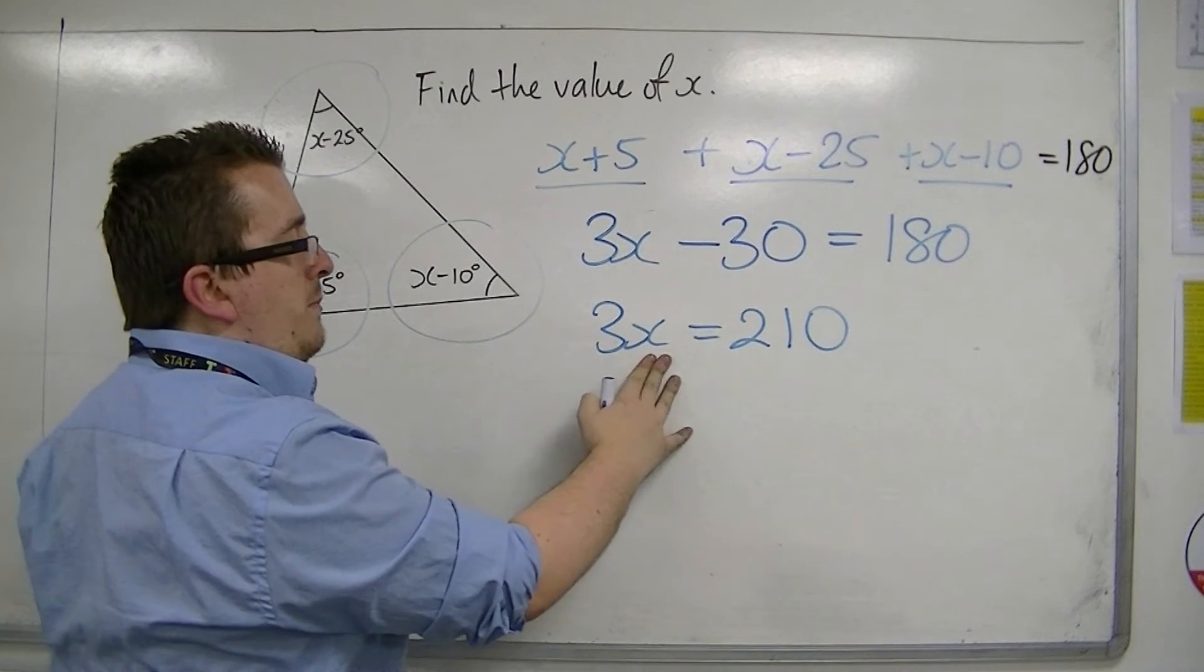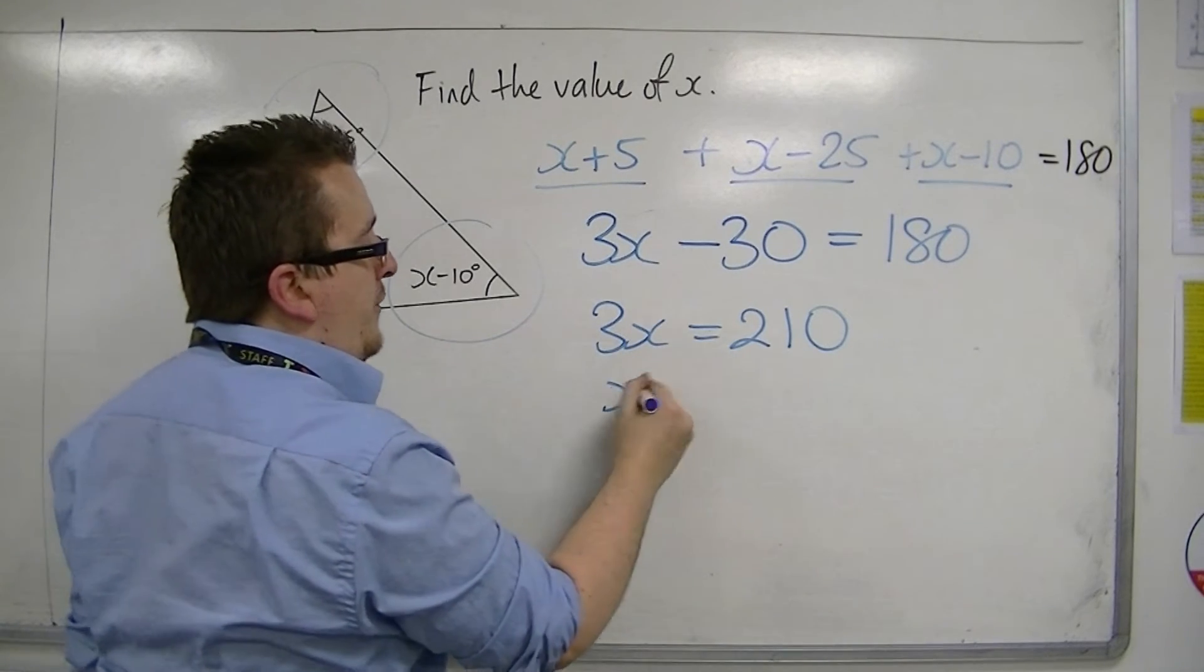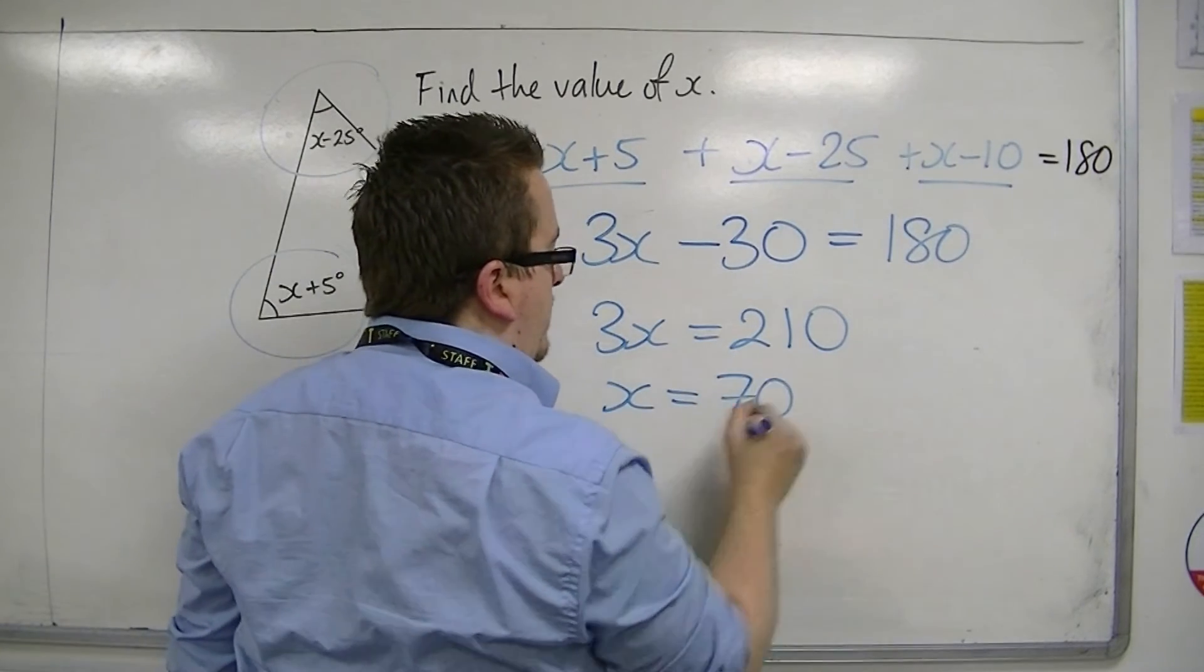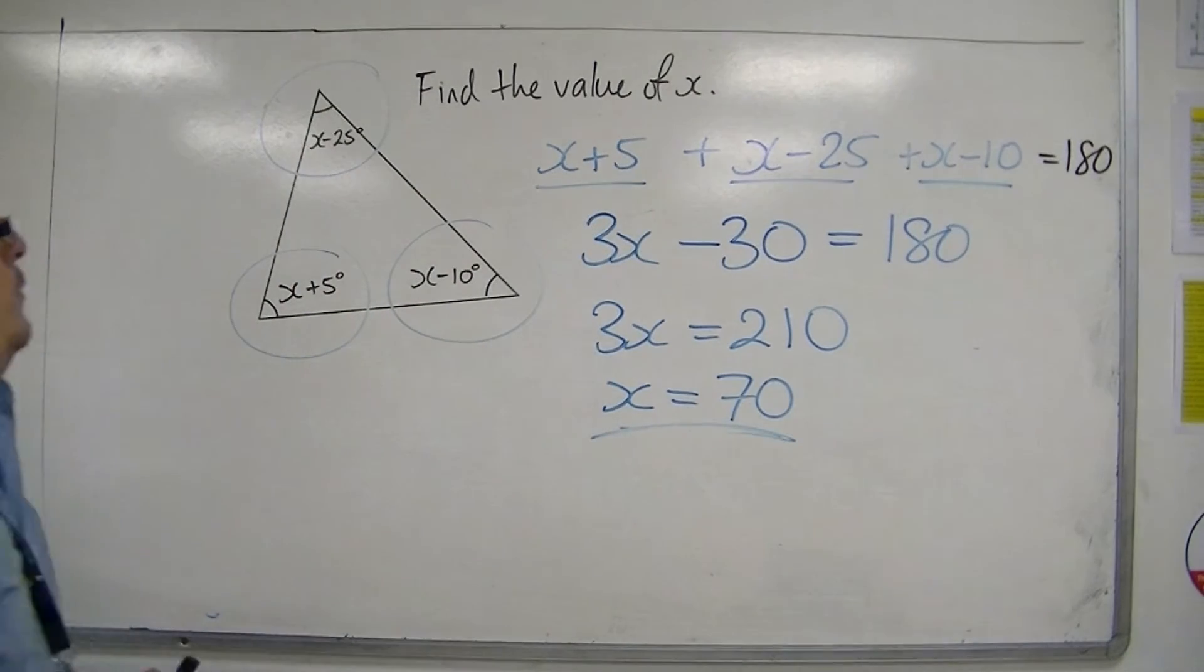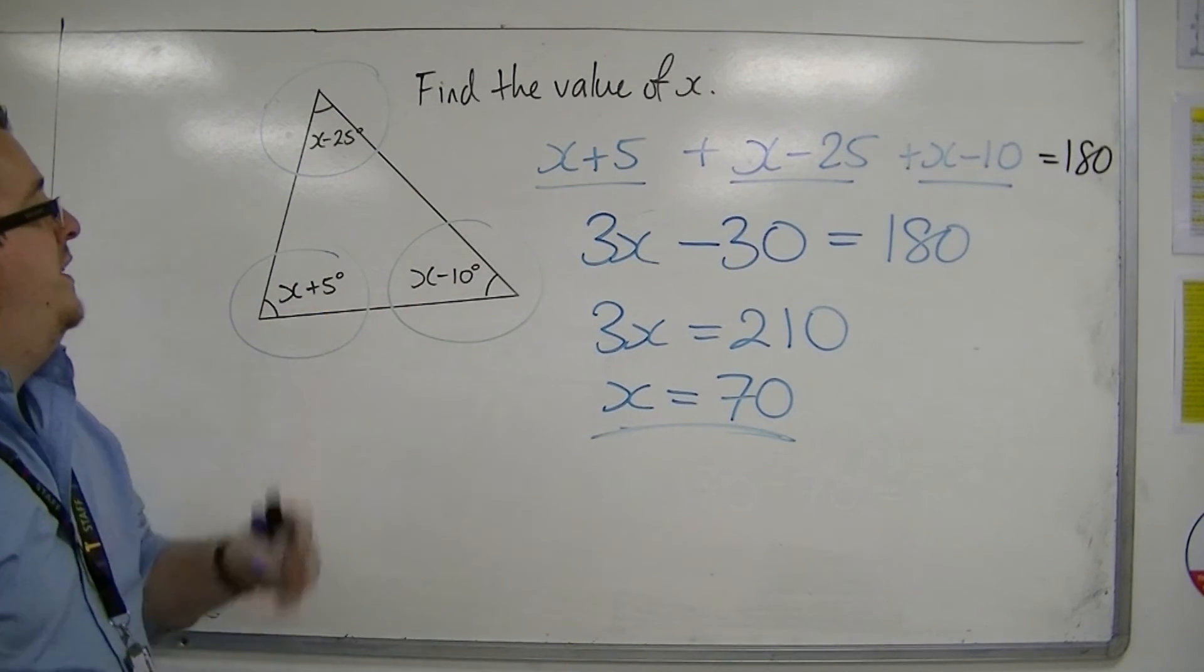So three lots of something is 210, and that something is 70. So that would mean x has to be 70 for this to work.